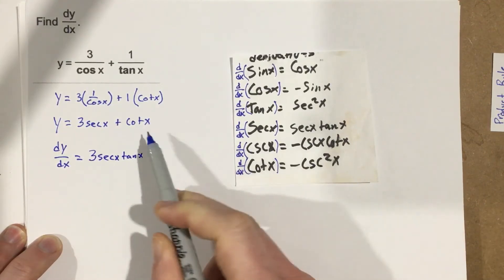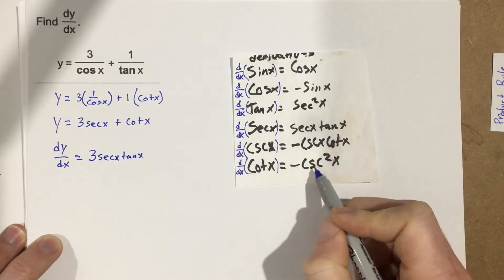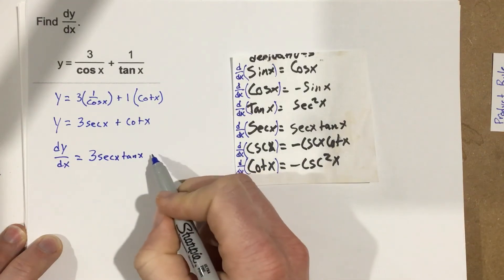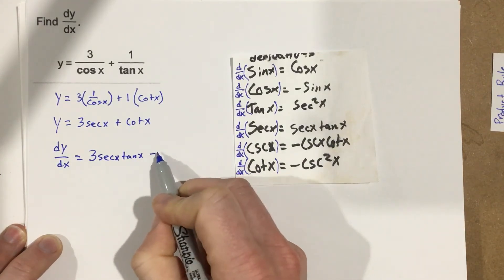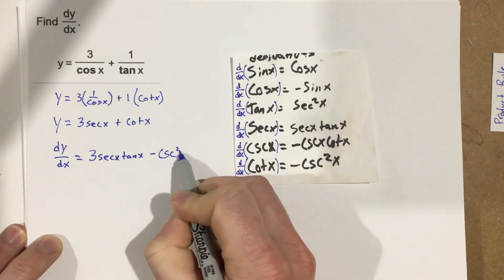And then the derivative of cotangent is negative cosecant squared x. So, this is minus cosecant squared x.